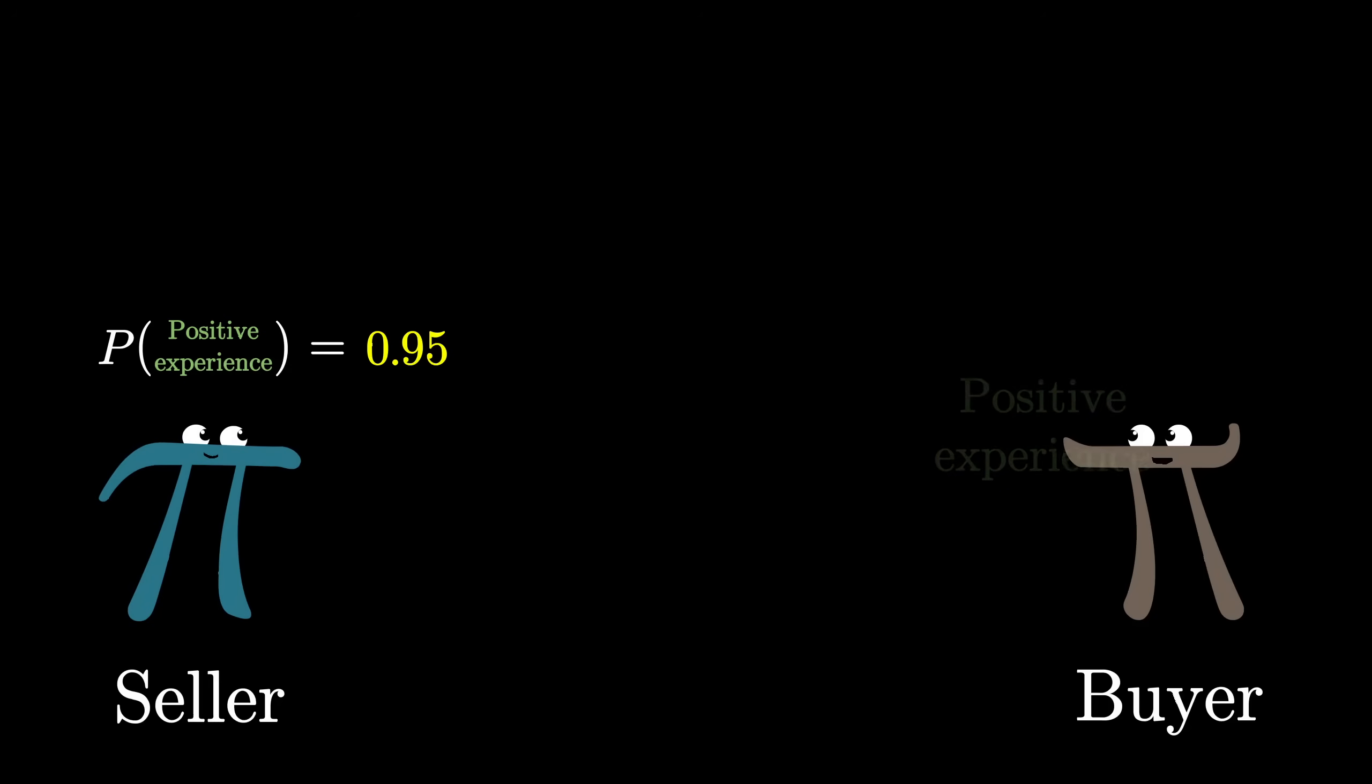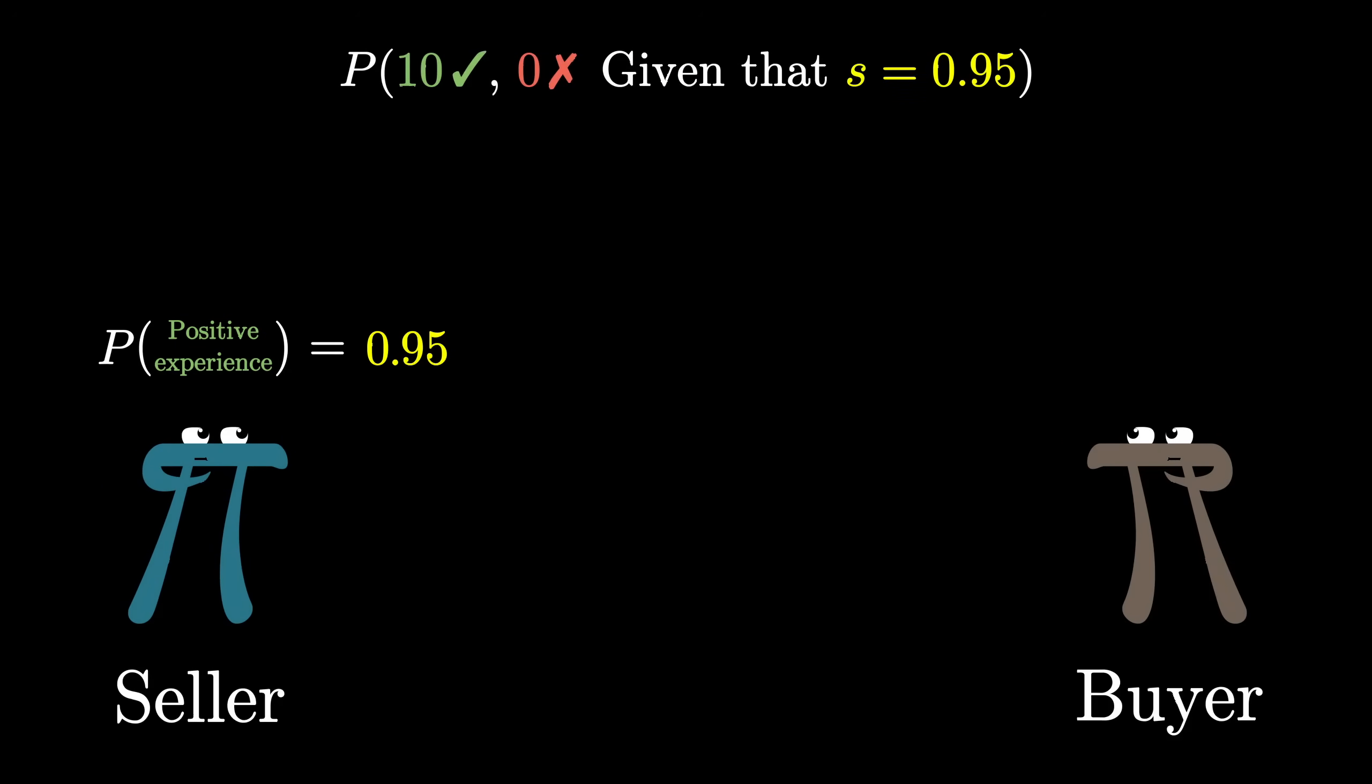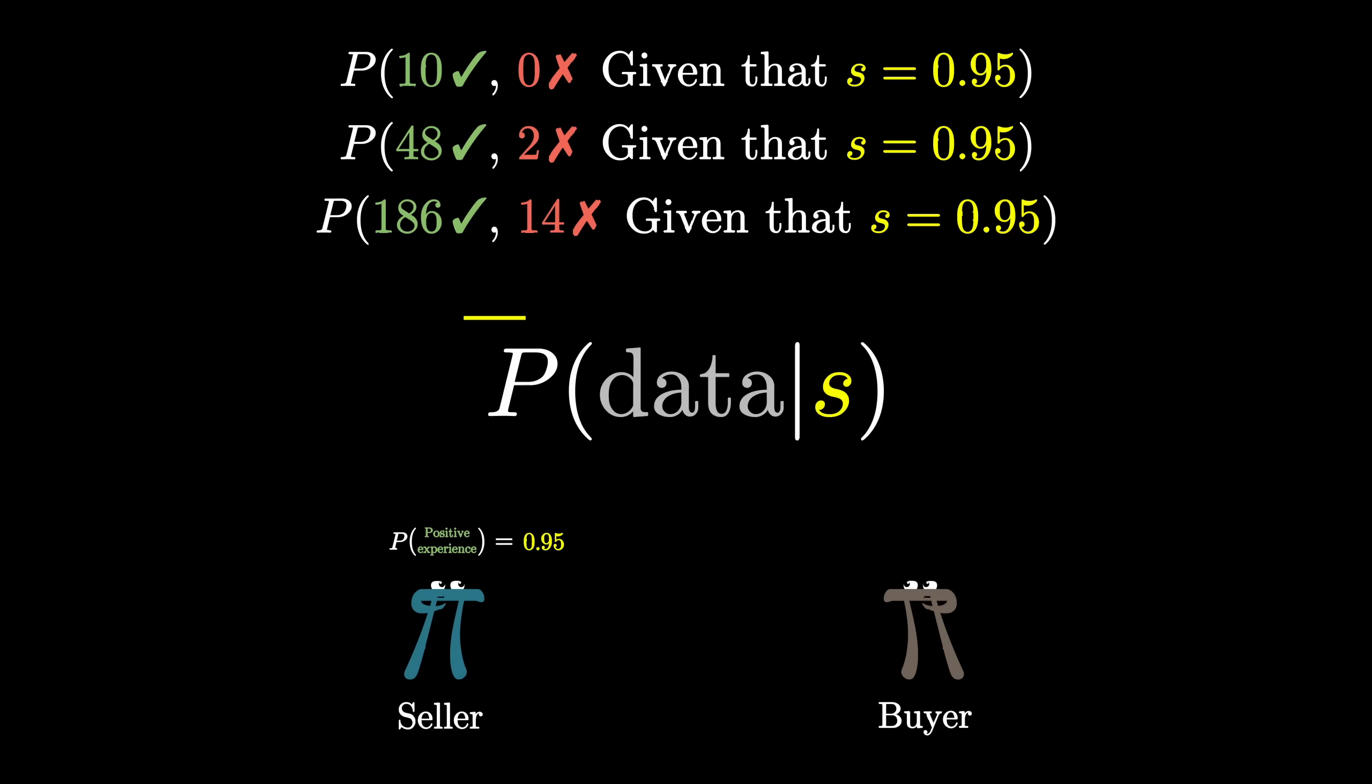As your first challenge, let me ask you this. If you did magically know the true success rate for a given seller, say it was 95%, how would you compute the probability of seeing, say, 10 positive reviews and 0 negative reviews, or 48 and 2, or 186 and 14? In other words, what's the probability of seeing the data given an assumed success rate?